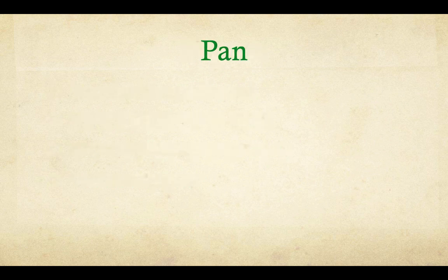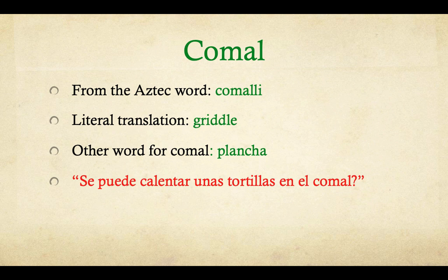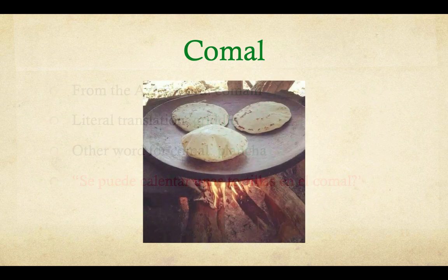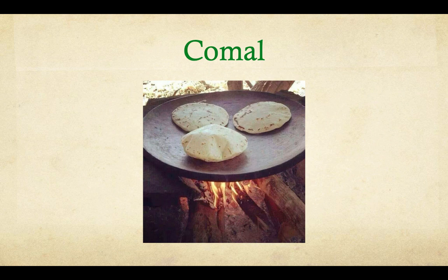Pan — as in a skillet or grill. 'Comal.' It comes from the Aztec word 'comal,' and the literal translation is like a griddle. Another word used throughout Latin America is 'plancha.' Example sentence: 'Se puede calentar unas tortillas en el comal.' If you go to Mexico, you'll see a lot of these — they're used for everything from meat to vegetables. In older times, comales were made from clay.